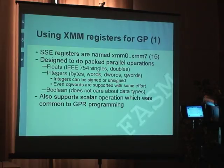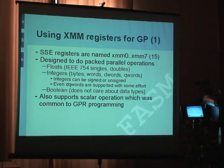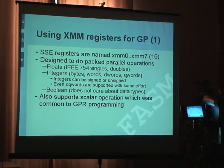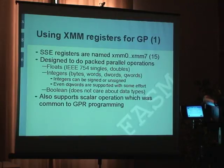The integers can be signed or unsigned, and it's completely dependent on the programmer. Even double quad words are supported with some effort, though it's not strictly supported by the architecture. Boolean doesn't care about data types, but Intel has made a small trick here — it detects the data type and the correct data type is almost faster. We can also support scalar operations, which is very common to general purpose computing — you have some multiple-operation and you do it with only one data unit.